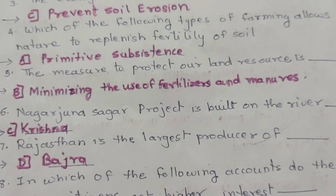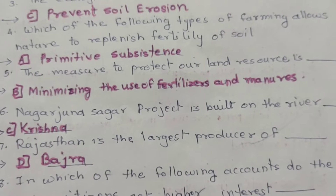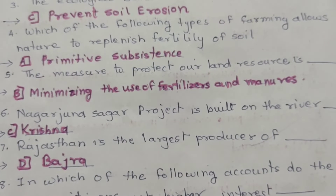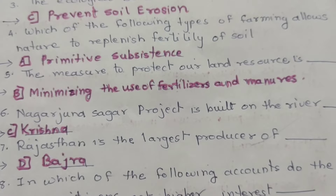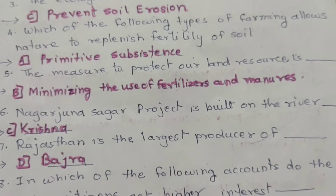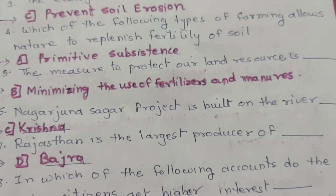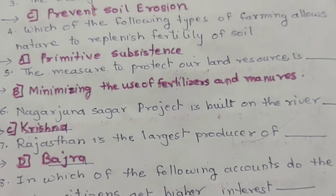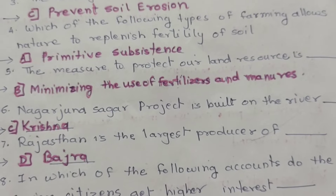Question 5: The measure to protect our land resource is — the correct option is B — minimizing the use of fertilizers and manure.